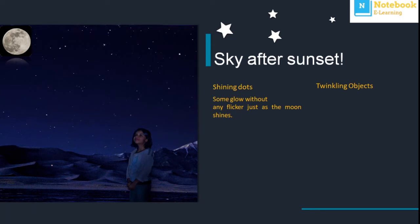The girl you can see on the screen also observed the sky at nighttime. She observed shining dots and twinkling stars, and when she tried to count them she could not, because the whole sky is filled with tiny objects — some bright, some not — and it seems the sky is studded with diamonds. She noticed that some objects are twinkling while others glow without any flicker, just as the moon shines.